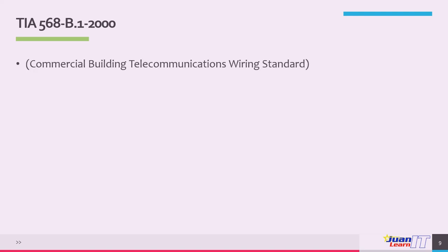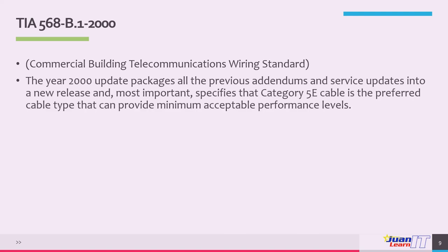The TIA 568B.1 series of 2000, also known as the commercial building telecommunications wiring standards, packaged all previous addendums and service updates into a new release. Most importantly, it specifies that Category 5 cable is the preferred cable type providing minimum acceptable performance. Several addendums were also released to specify technical information for 100 ohm twisted pair cable, shielded twisted pair cable, and optical fiber cable.